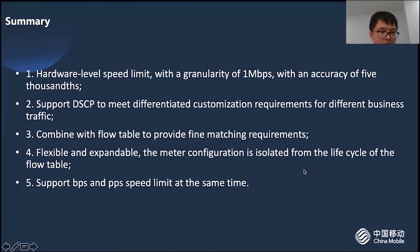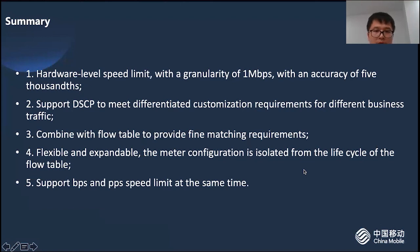Here are the advantages of our architecture. One: hardware-level speed limiting with a granularity of 1 Mbps with an accuracy of 5%. Two: support for DSCP to meet differentiated customization requirements for different business traffic. Three: combine with flow table to provide fine-grained matching requirements. Four: flexible and expandable — the Meter configuration is isolated from the lifecycle of the flow table. Five: support BPS and PPS speed limiting at the same time.